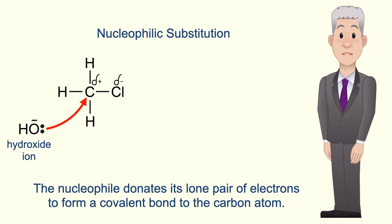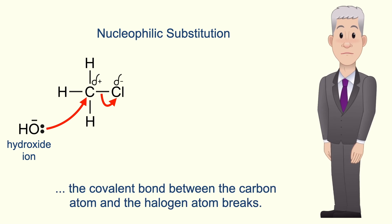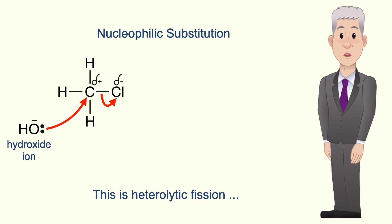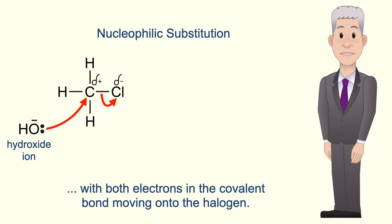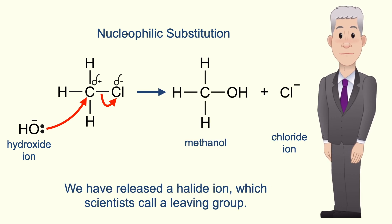The nucleophile donates its lone pair of electrons to form a covalent bond to the carbon atom. Because a carbon atom can have a maximum of four bonds, the covalent bond between the carbon atom and the halogen atom breaks. This is heterolytic fission, with both electrons in the covalent bond moving on to the halogen. At the end of hydrolysis we've made an alcohol molecule and we've released a halide ion, which scientists call a leaving group.